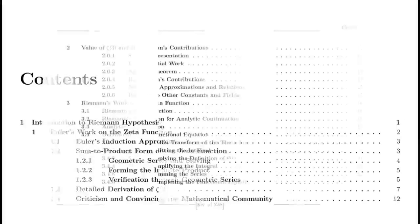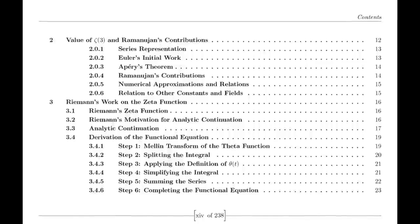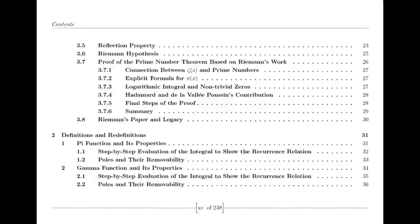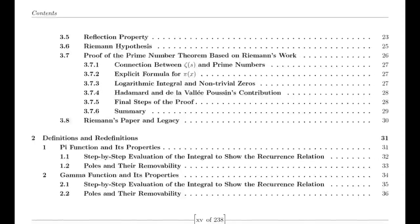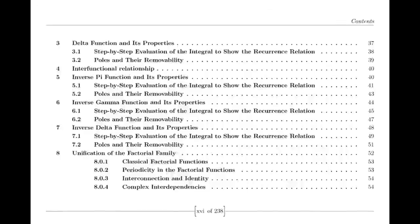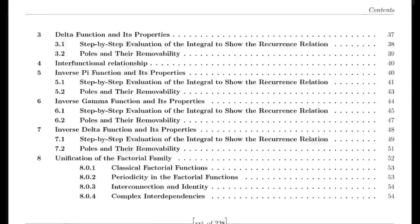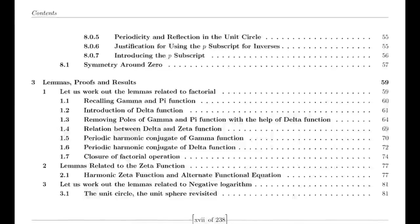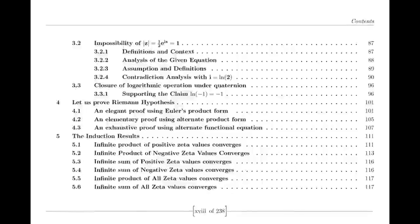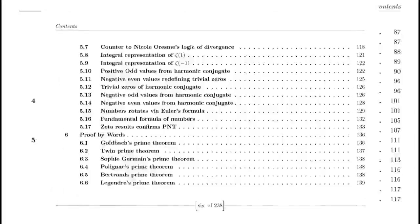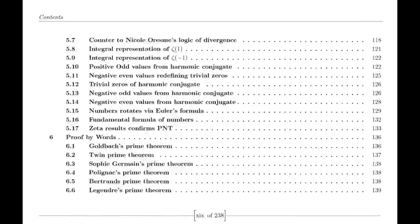In the 20th century, the zeta function continued to evolve. The emergence of analytic number theory brought new techniques for understanding the function's behavior. Mathematicians like Hadamard and de la Vallée Poussin demonstrated the profound connection between the zeta function and the distribution of prime numbers. As the century progressed, the zeta function found its way into physics, probability theory, and even quantum mechanics, revealing that the quest to understand prime numbers was a journey into the very foundations of the universe.